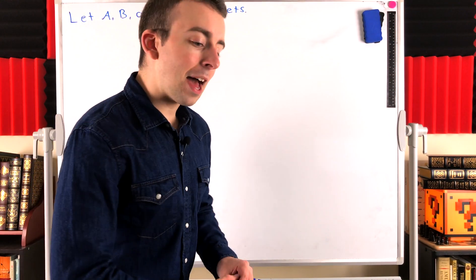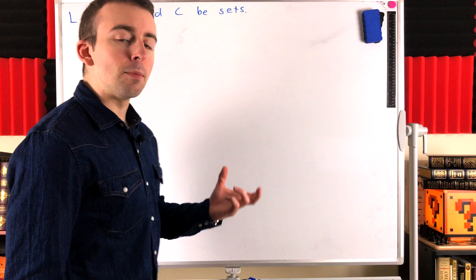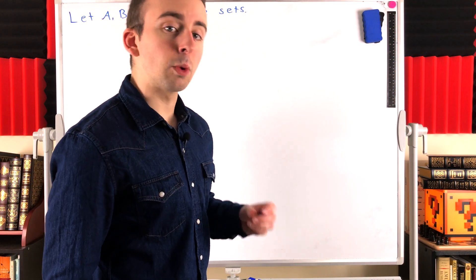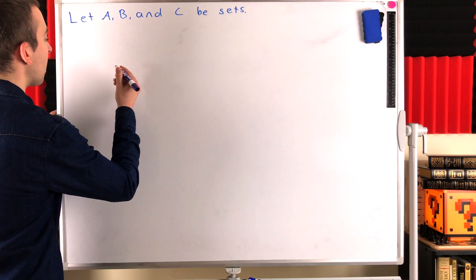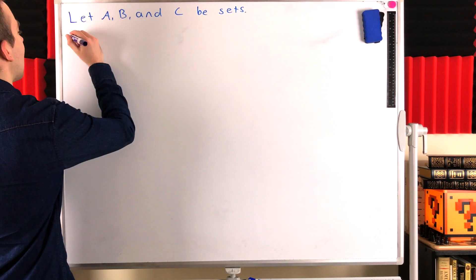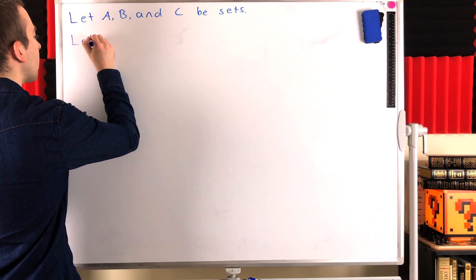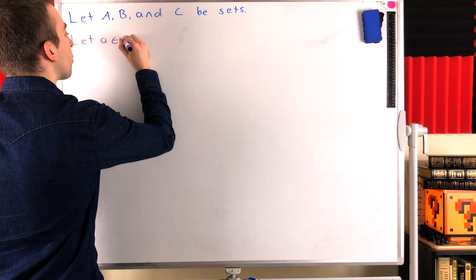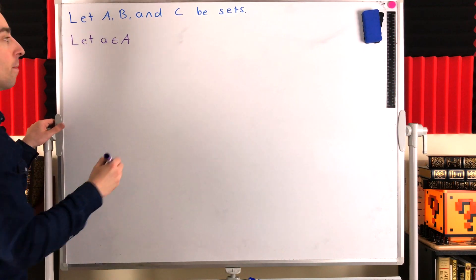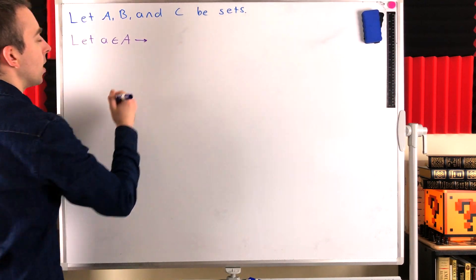First, reflexivity. That means that every set should be a subset of itself. That's what it would mean for subset to be a reflexive relation. So let's just consider the set A. Is A a subset of itself? Well, if we just take an arbitrary element, little a, from our arbitrary set, big A, what does this mean?